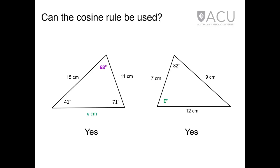In these two triangles, the cosine rule can be used. The 68 degree angle on the left can be deduced, and then side length N can be found. And on the right, the magnitude of angle E can be found by using the three known side lengths.